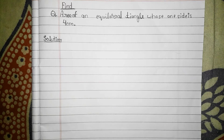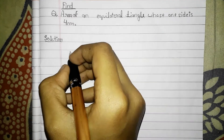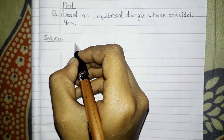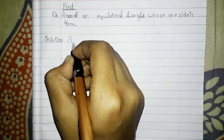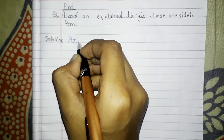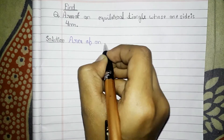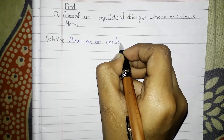Find the area of an equilateral triangle whose one side is 4 centimeters. First, let's note the area of an equilateral triangle formula.